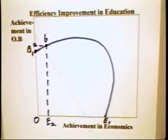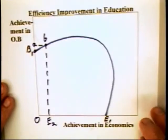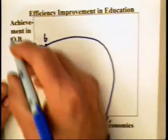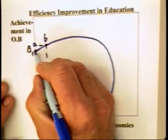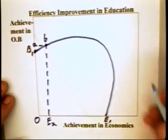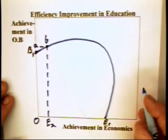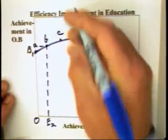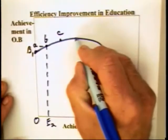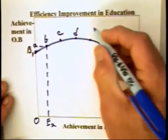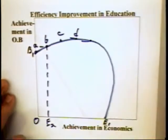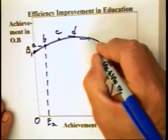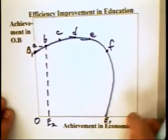Why? Because economics makes understanding of organizational behavior all the easier. The connection between OB and economics may be a bit strained, but suppose we had math on the vertical axis. If you study all math, you might learn something like that point. But if you apply time to economics, you might learn more math simply because it makes math more interesting. You can move to point C and point D. But at some point, as more time is applied to economics, organizational behavior goes down.